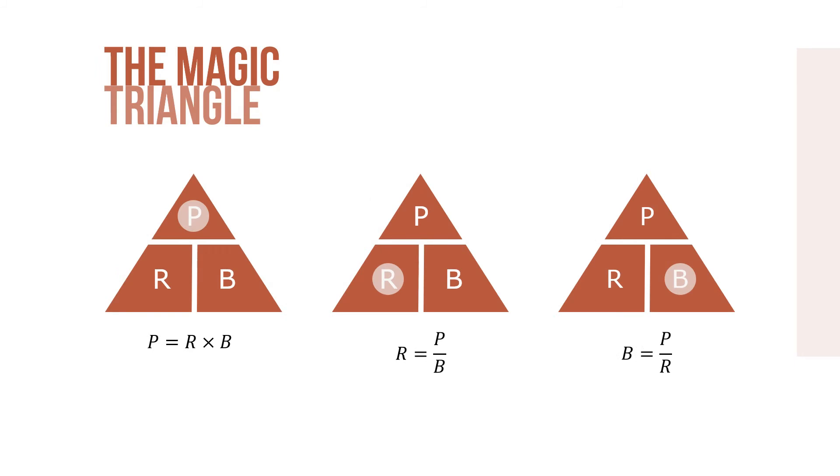Another method for remembering the percentage formulas is using the magic triangle. It's my preferred method. The triangle is divided into three sections representing the portion, rate, and base. By circling the letter in the percentage triangle that corresponds to the unknown of the problem, the triangle will magically reveal the correct formula to use. Let's take portion as an example: P equals R times B. You see it right there in the triangle, and so on for each of the other formulas.